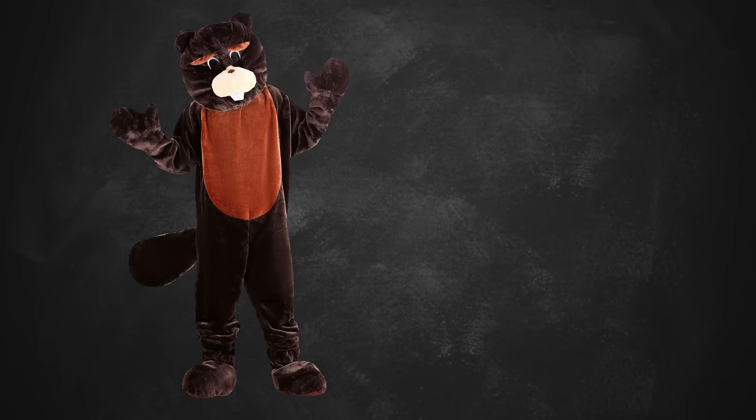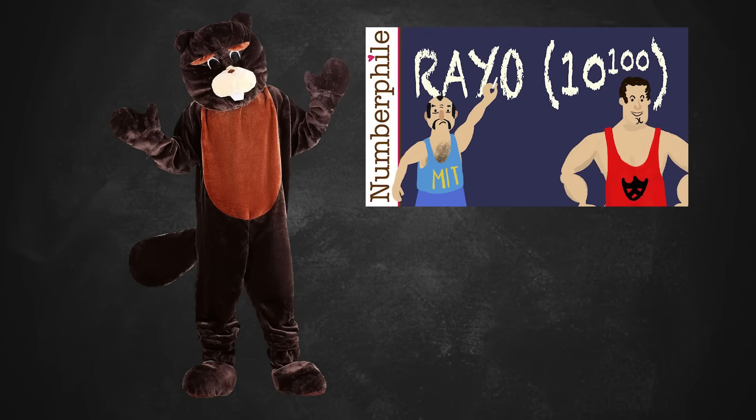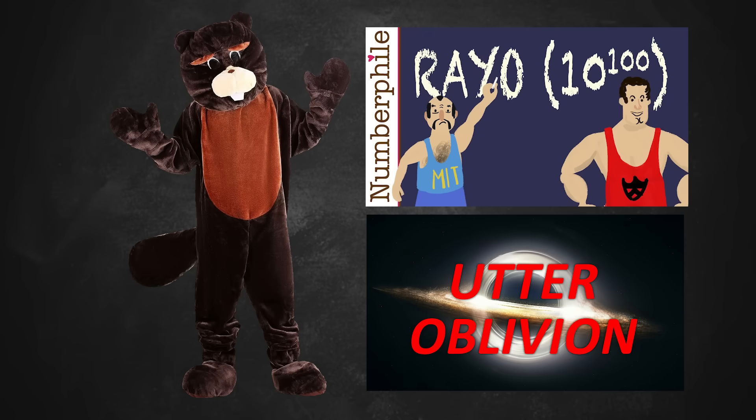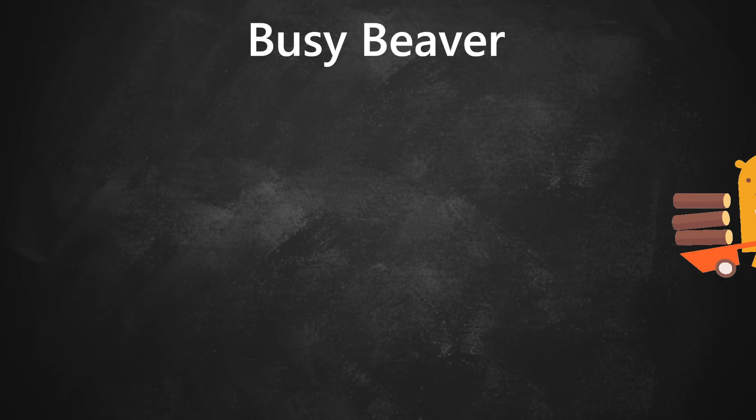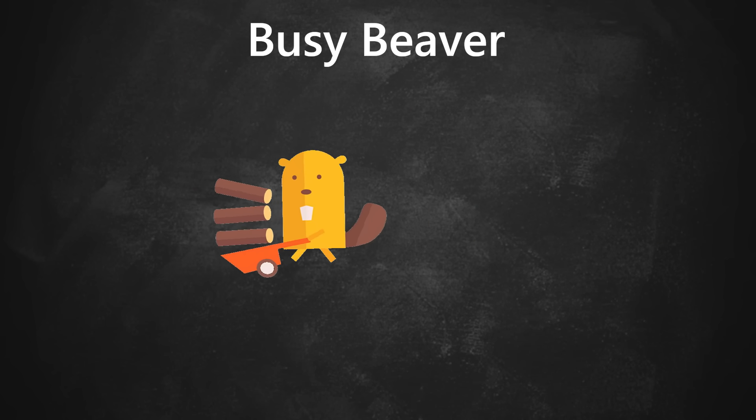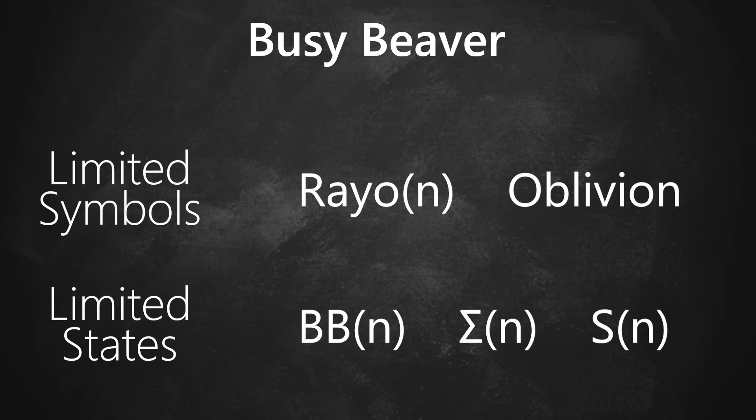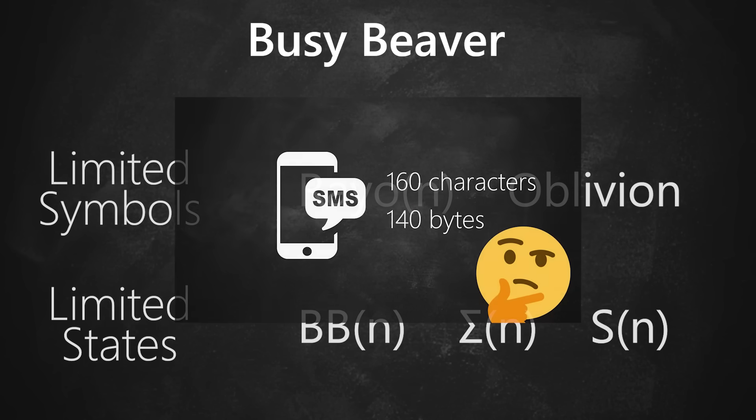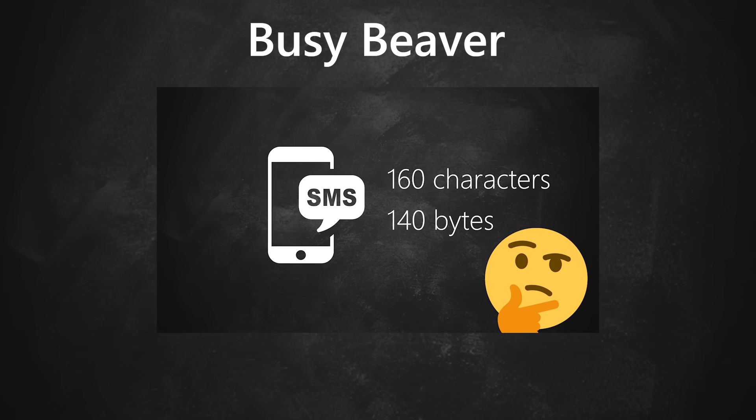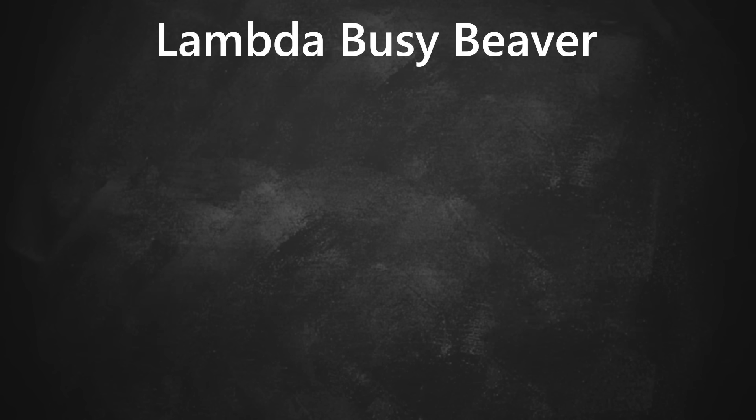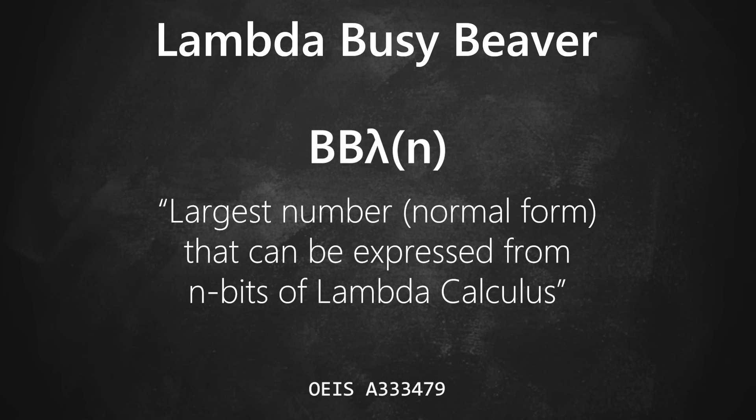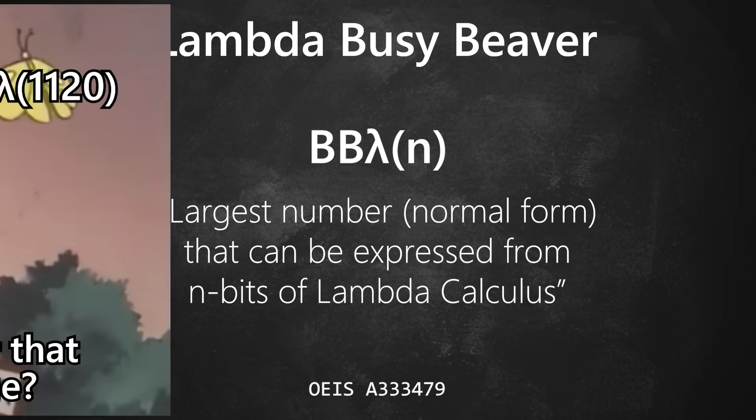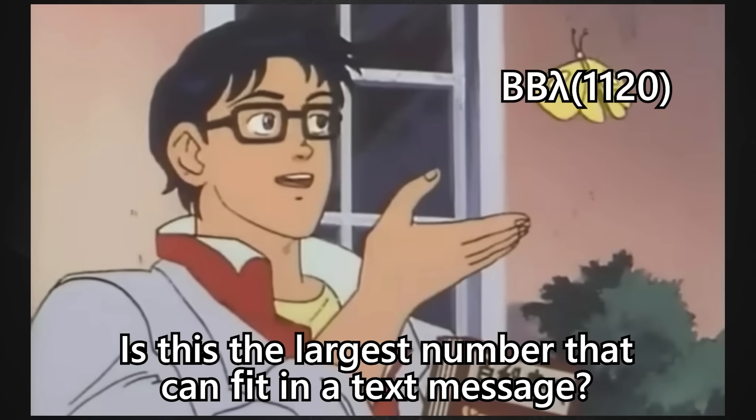I saw a ton of comments about busy beavers and other similar functions like Rao's number or even Utter Oblivion. A busy beaver function defines a number based on the largest value you can get by using a limited number of symbols or states, which was exactly what I was trying to do in that first video. In fact, there's already a lambda busy beaver function for binary lambda calculus. So that's the answer, right? Is this the largest number that can fit in a text message?